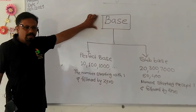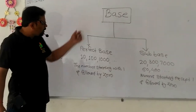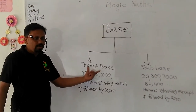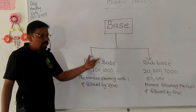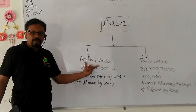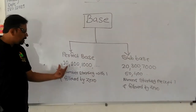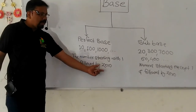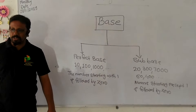In Vedic Mathematics, there are two bases. One base is called PERFECT BASE and another base is SUBBASE. The PERFECT BASE is the number starting with one and followed by zeros — for example, 10, 100, 1000, etc.